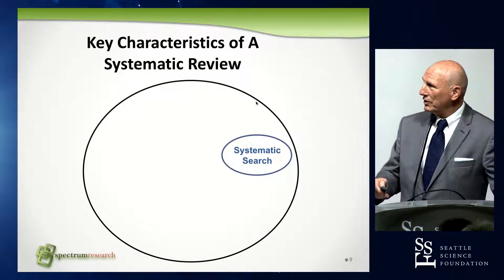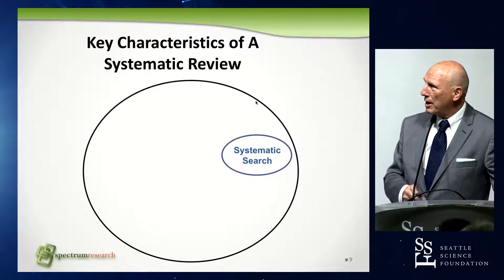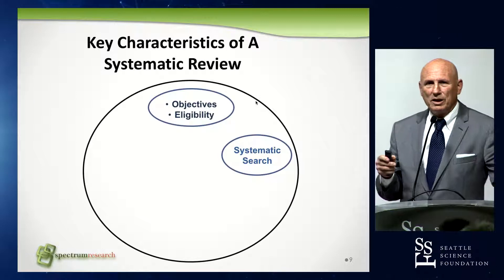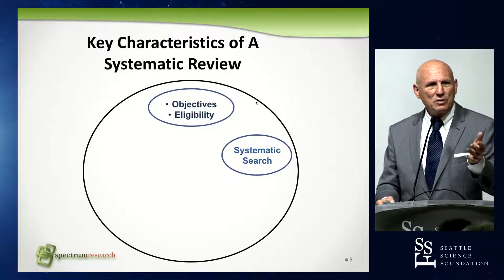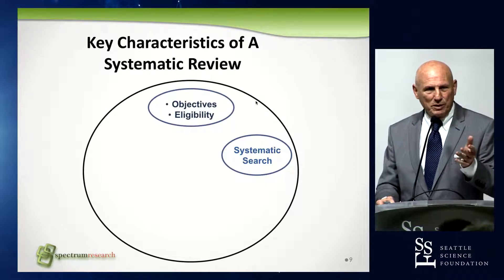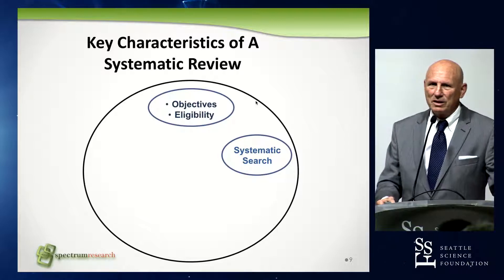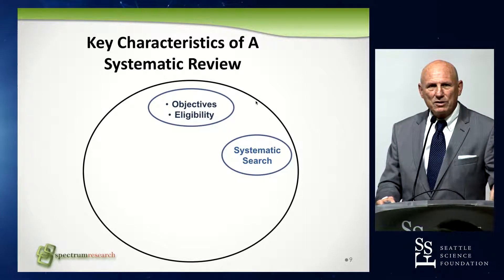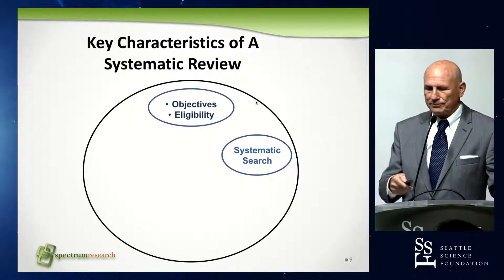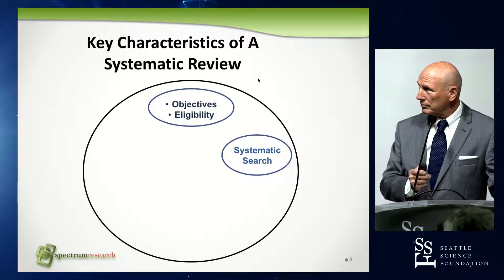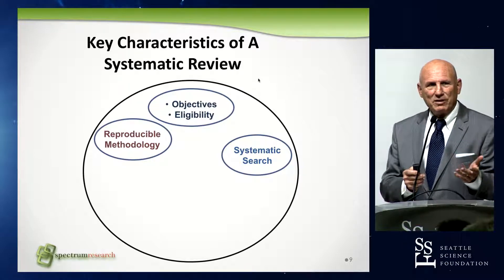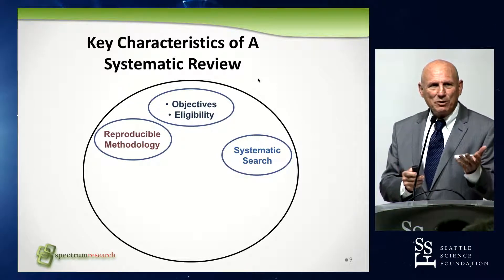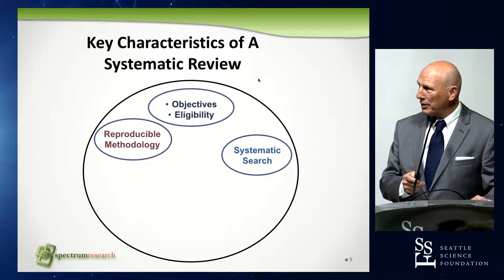A systematic review not only entails systematic searches, but also includes a clear statement of objectives and all a priori eligibility criteria. You have to decide ahead of time what studies you're going to include — the populations, interventions, comparator, and outcomes — prior to starting the review. You also have to have a reproducible methodology; somebody should be able to take your review and repeat it exactly the way you did it.